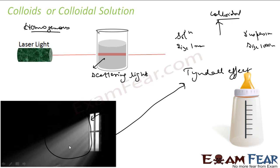Colloidal solutions are also pretty stable — if you keep them for a long time, the particles won't settle down. To summarize, colloidal solution particle size is in the range of 1 nanometer to 1000 nanometers, and it shows the Tyndall effect by scattering a beam of light.